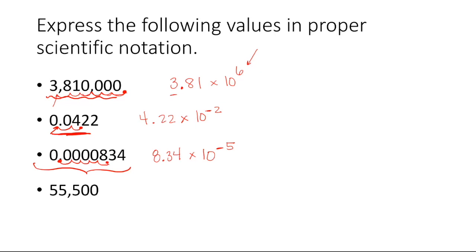For the last number, the first part has one digit to the left of the decimal point, so I write 5.55 times 10 to the... The decimal point originated at the end and I moved it between the first two 5s — that's 4 places. I know the exponent is positive because this number is larger than 1, giving us 5.55 times 10 to the 4th. Hopefully you're now a little more familiar with seeing a number in scientific notation and understanding what it means in standard notation.